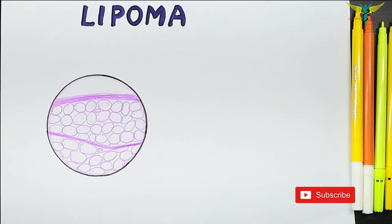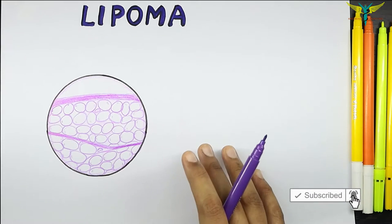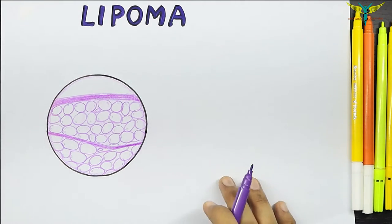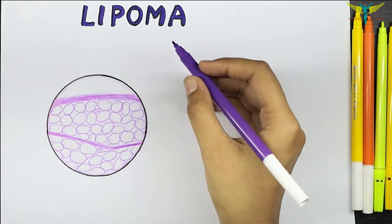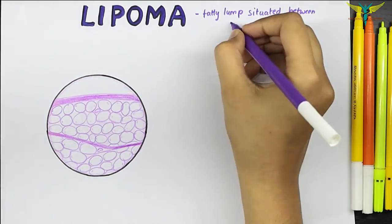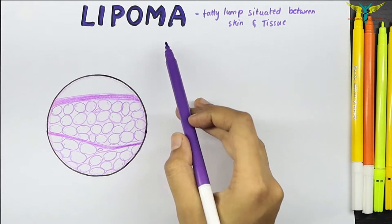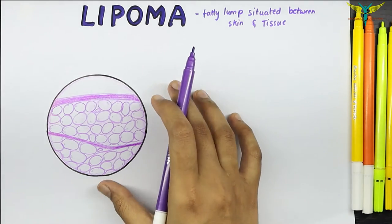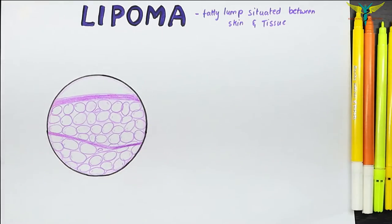In this video, let's learn about the histopathology of the lipoma. In normal language, a lipoma is a fatty lump situated between the skin and the underlying muscle layer. Lipomas are generally slow-growing and usually harmless, though sometimes they can be cancerous. Let's get into the histopathology.